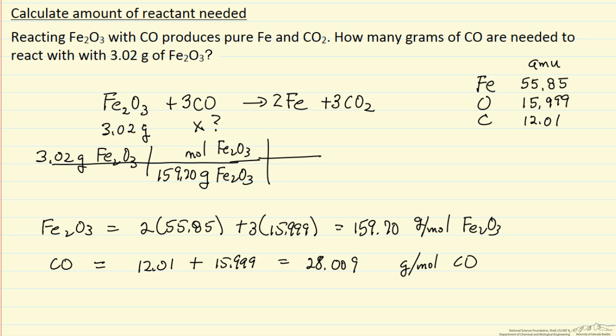Now we know there are 3 moles of CO for every mole of iron oxide. And we just calculated there are 28 grams of CO for every mole of CO. So if I look at this: grams, moles of CO, moles of CO. I'm calculating the grams of carbon monoxide that I need.